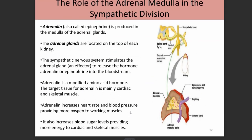The adrenal medulla plays a key role in the sympathetic division by producing adrenalin, also called epinephrine, from the middle of the adrenal gland, which is located on top of the kidney. The sympathetic system stimulates the adrenal gland to release adrenalin and noradrenaline into the bloodstream. Epinephrine is a modified amino acid hormone whose receptors are found mainly in cardiac and skeletal muscles.